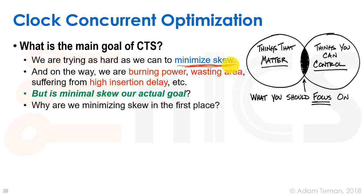There's this chart with a circle of things that matter and a circle of things you control. We should really focus on the part we can control that actually matters. We shouldn't be focusing on things we can control that don't really matter. So why are we trying to minimize skew?